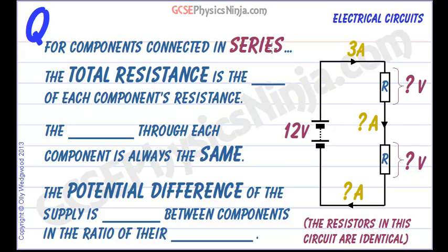For components connected in series, that is one after the other in the same loop of wire, the total resistance is the sum of each component's resistance.